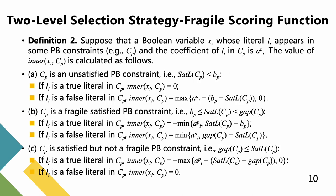To maintain the information of fragility for each literal during the search process, we define inner as below. Suppose that a boolean variable xi whose literal li appears in some PB constraints and the coefficient of li in Cp is api. The value of inner(xi, Cp) is calculated as follows. The value of inner(xi, Cp) is subject to three distinct factors including the state of Cp, the value of li, and the coefficient of li.